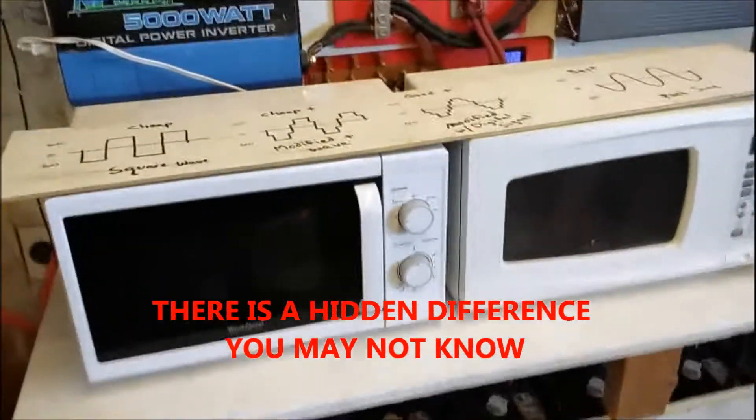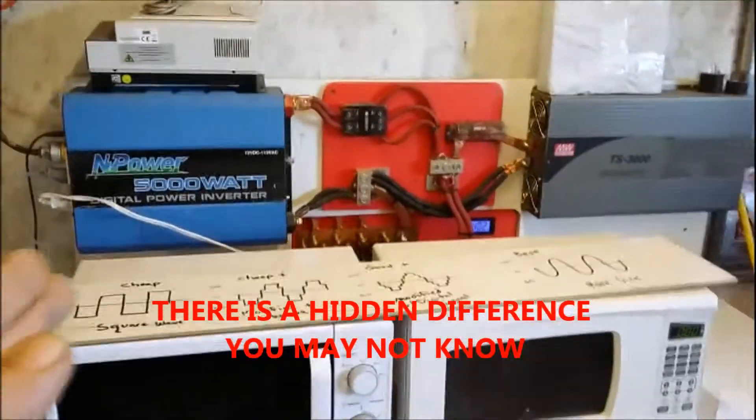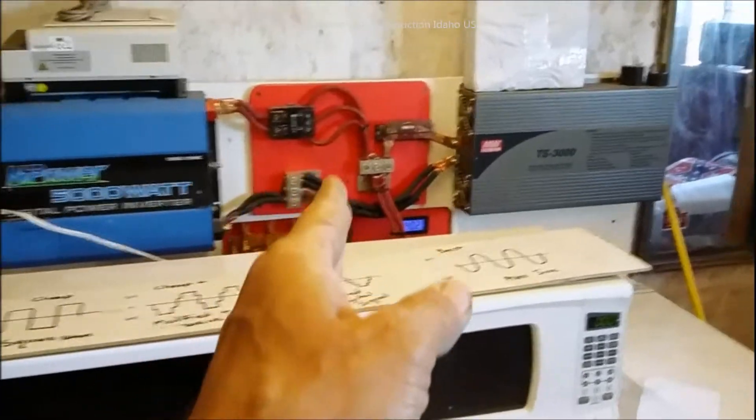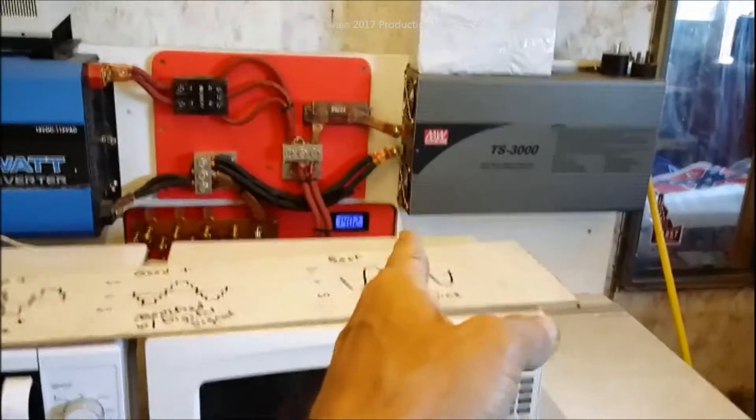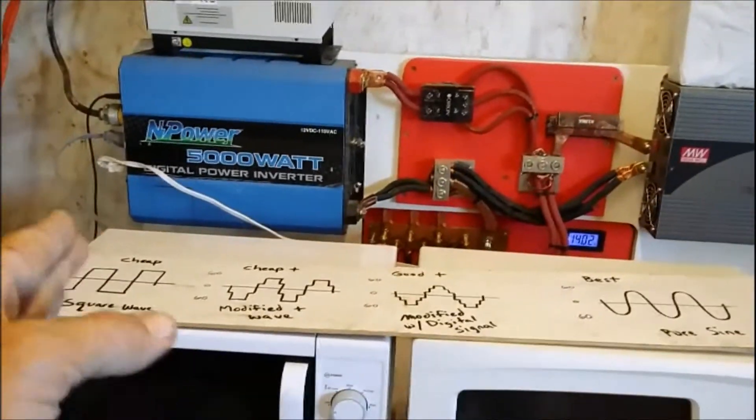Hey folks, I'm going to do a little video here for people who don't know the difference between modified or square wave, modified with digital signal integrated digital signal, and true sine wave. There are different levels of square wave inverters as well as true sine wave like this one.